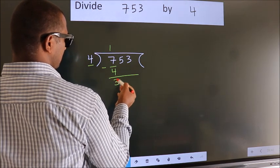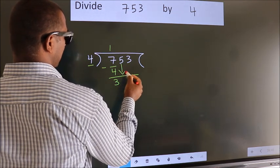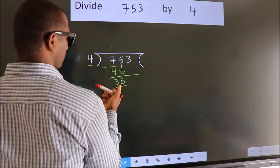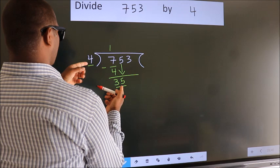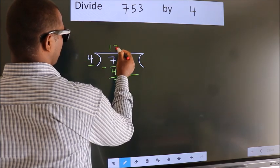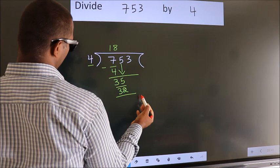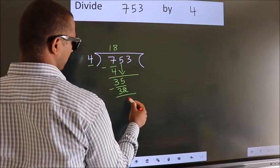After this bring down the beside number. So 5 down. So 35. A number close to 35 in 4 table is 4, 8, 32. Now we subtract. We get 3.